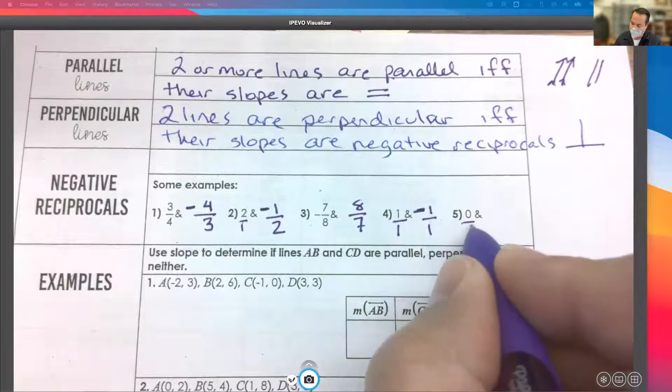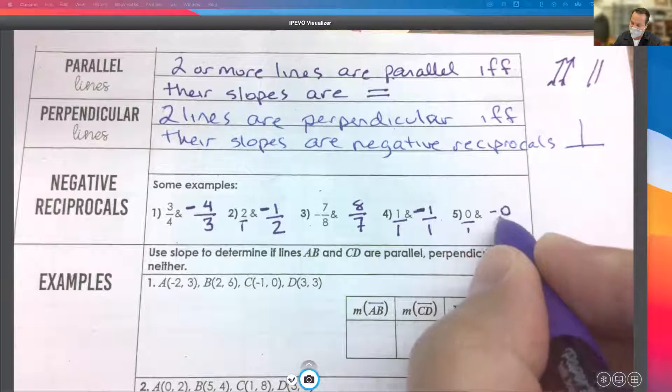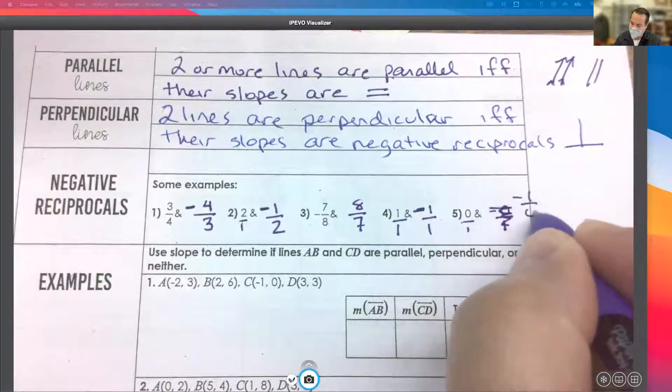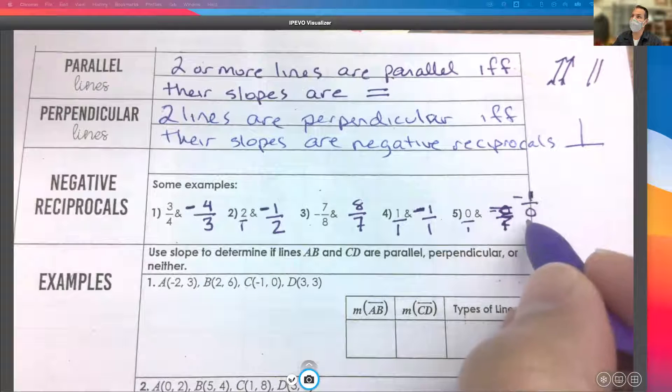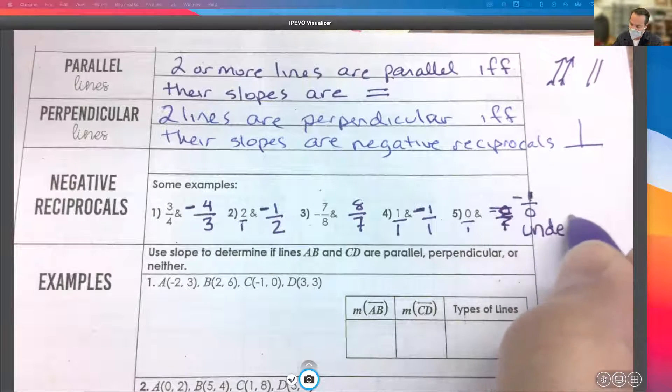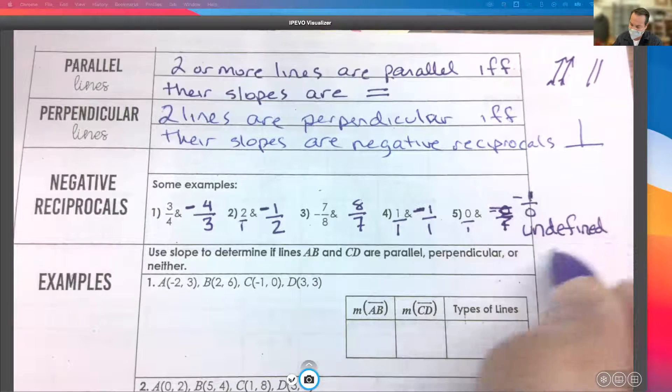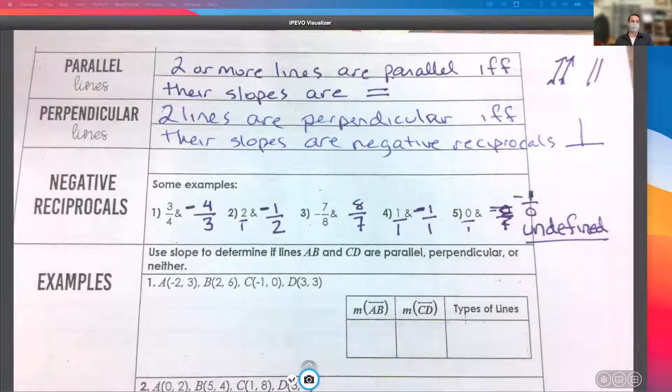How about number three? What's the negative reciprocal of negative seven eighths? Good. Positive eight sevenths. And what's the negative reciprocal of slope of one? Because this is really like one over one. So we'd flip it over and still get one over one. But now it would be negative. And lastly, this one messes with people. What's the negative reciprocal of zero? Well, this is zero over one. So the negative reciprocal would be negative one over zero. But you can't divide by zero, can you? So this slope would be undefined. We'd call the slope that's the negative reciprocal of zero undefined.